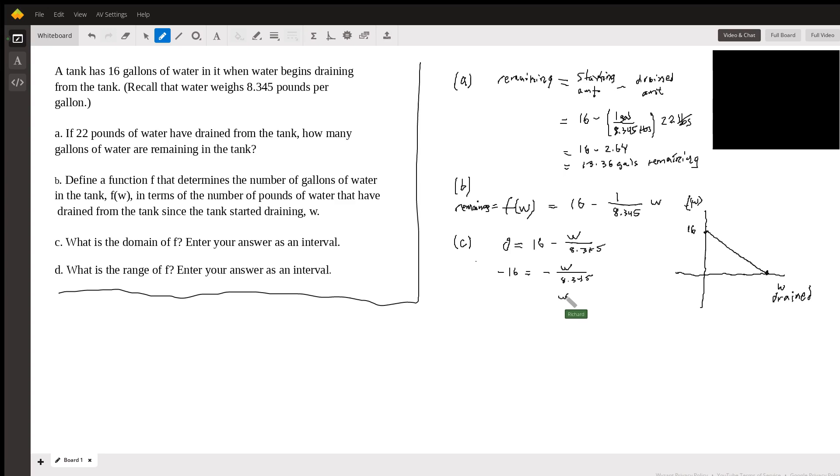So then W is going to be 16 times 8.345, which is going to be 133. So that's going to be this coordinate, 133 comma zero, just rounding it to the nearest pound of water.